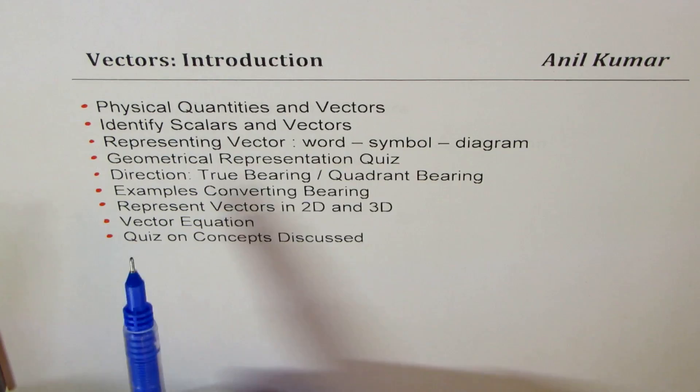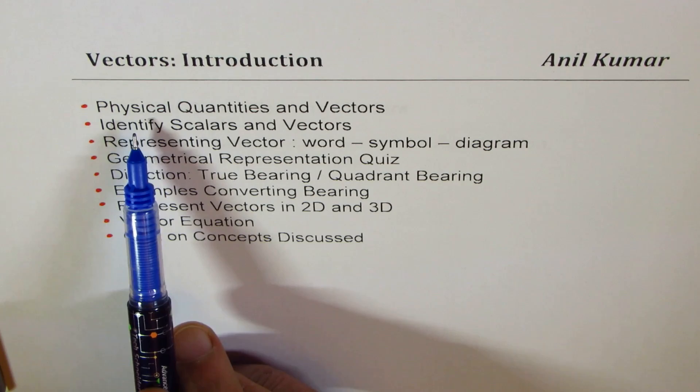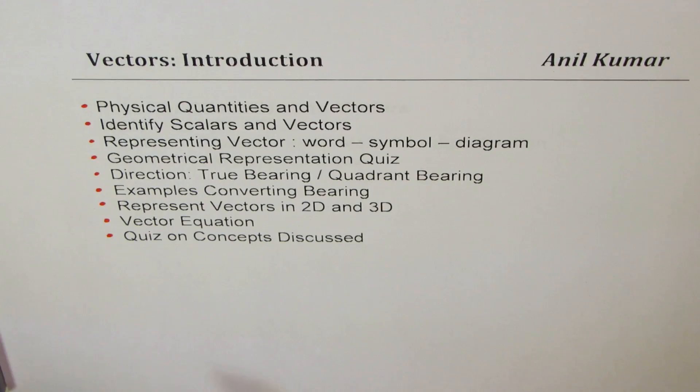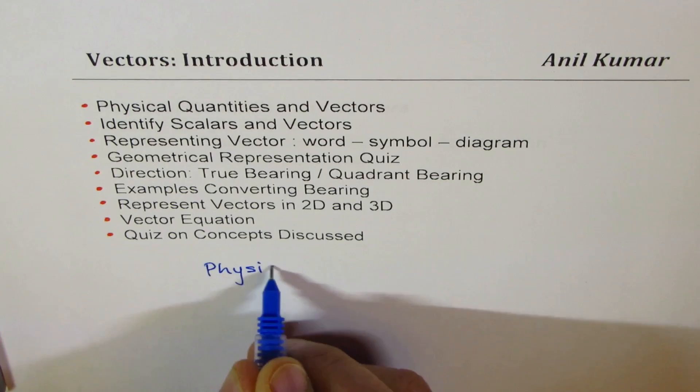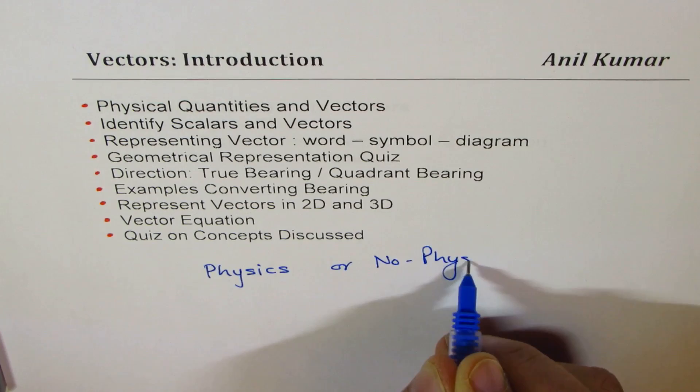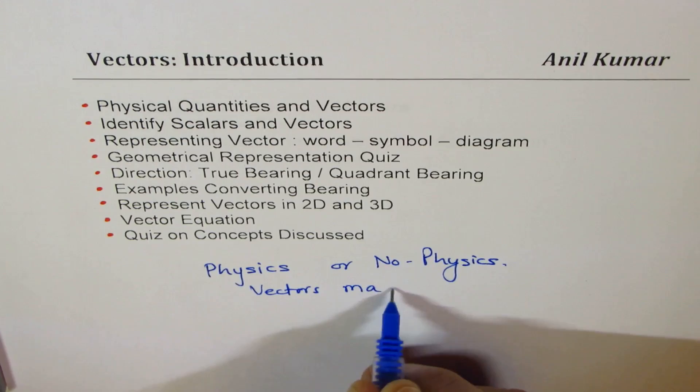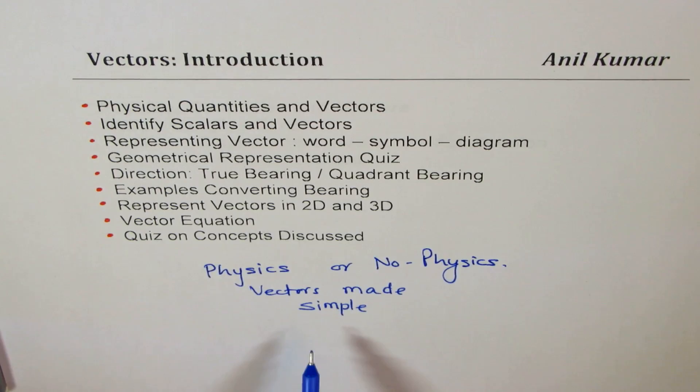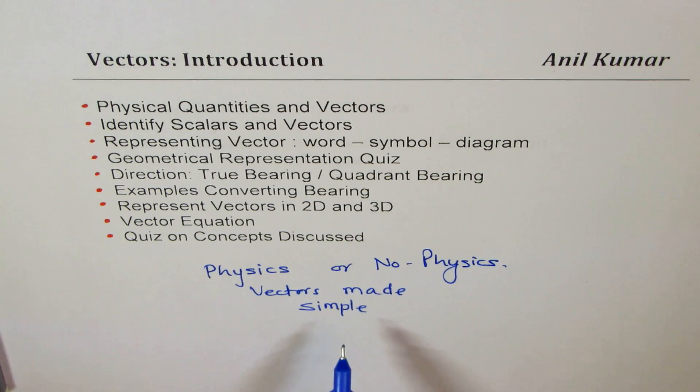This is especially included since some of my subscribers have suggested that they haven't taken physics and they want to do vectors. So let me make a note here — physics or no physics, it is vectors made simple. When you go through my series you'll find it doesn't really matter whether you have taken physics or not. I'll explain as and when the terms come.